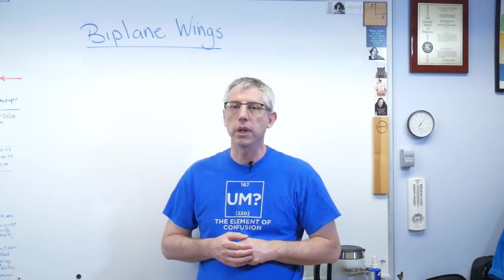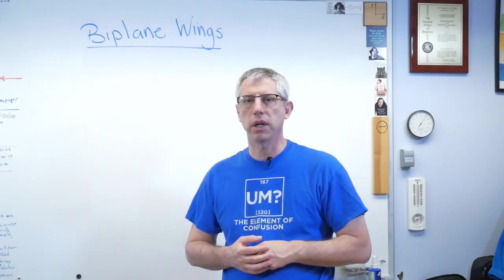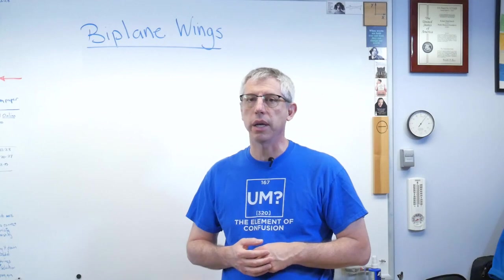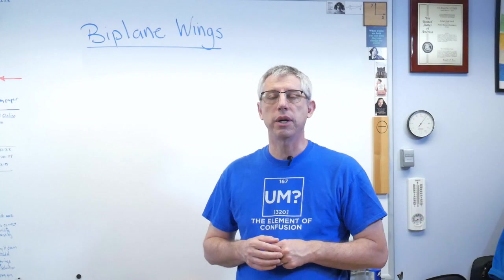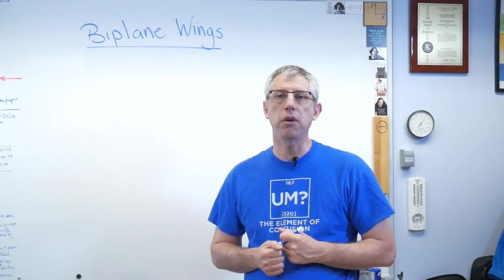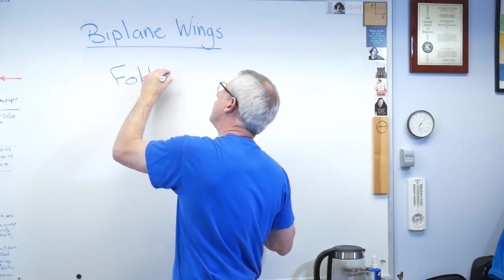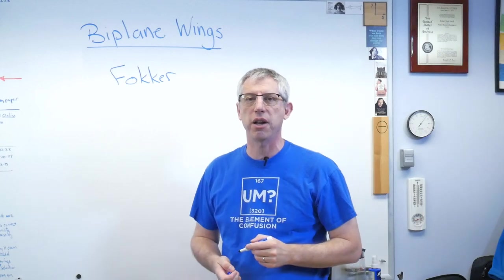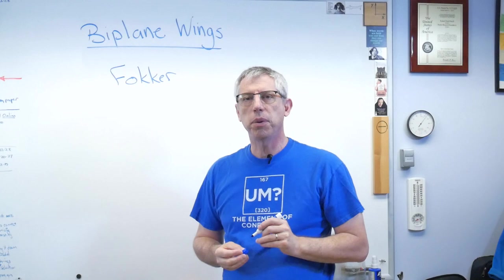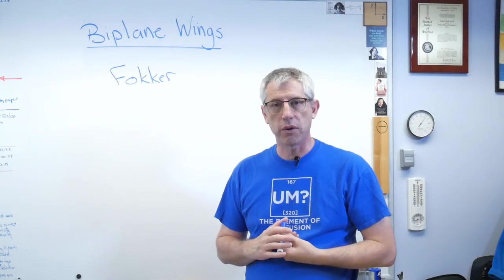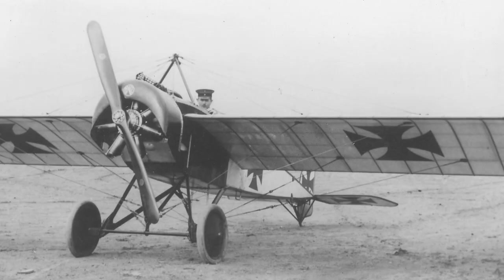One of the first really successful planes was a German plane called an Eindecker. Eindecker translates roughly into 'single wing' — it was a monoplane instead of a biplane; it had one set of wings instead of two. It was designed by a Dutchman, a very famous aircraft designer named Anthony Fokker — F-O-K-K-E-R. If you speak English, get the giggling out of the way right now. That's his name, and I am pronouncing it correctly. This plane had one set of wings, but the load-carrying structure was almost all outside the wings. Here's what one looks like.